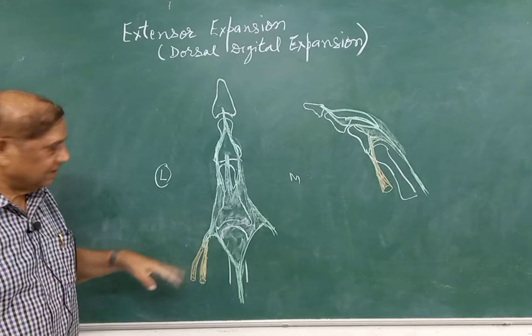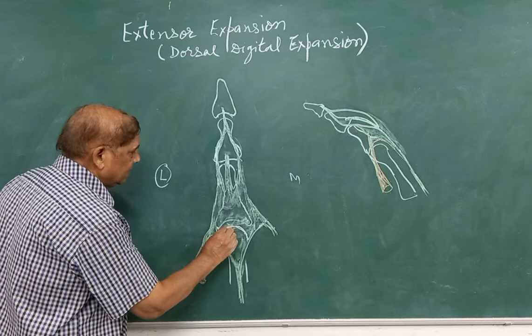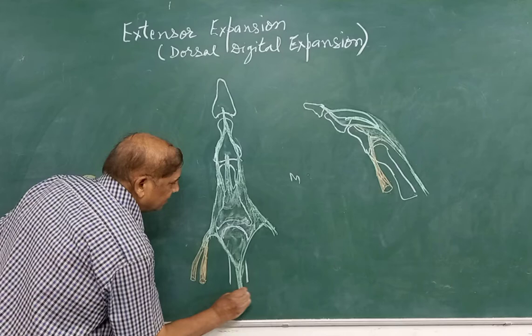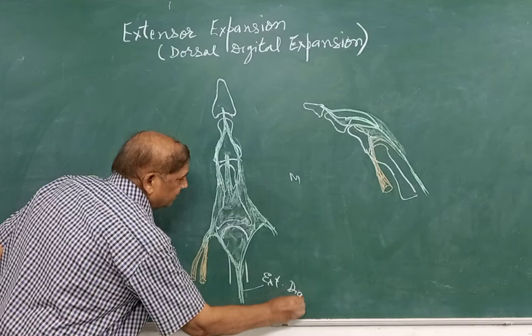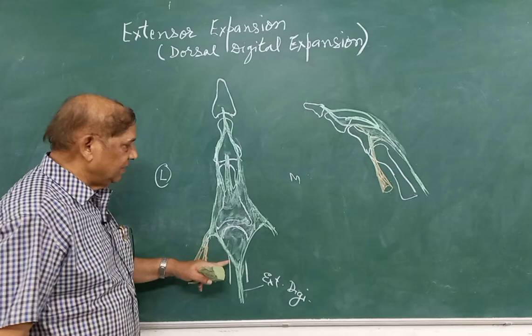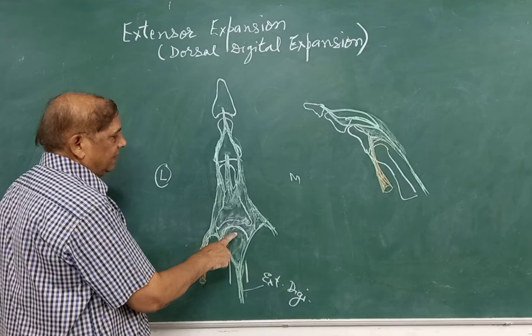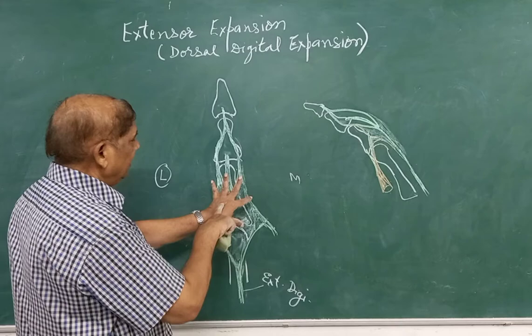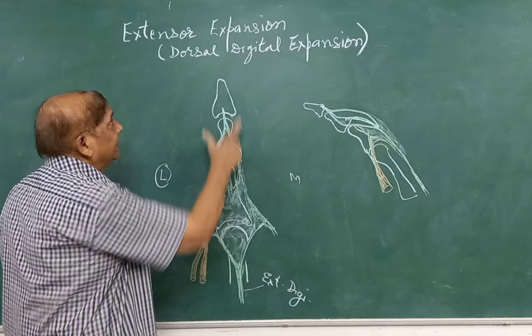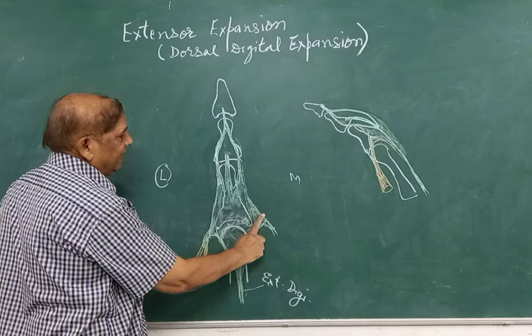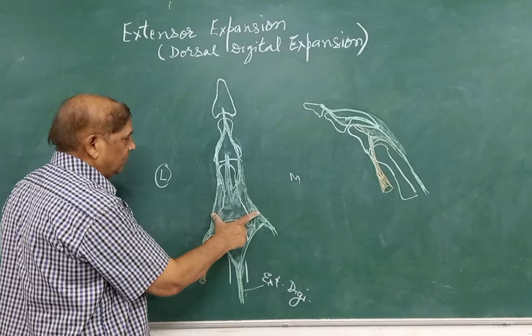This is the head of the metacarpal bone, and this tendon is the tendon of the extensor digitorum. This is the posterior aspect — the metacarpal head — and the extensor digitorum tendon goes on. When it approaches the metacarpophalangeal joint on its posterior aspect, this tendon expands. So this is the extensor expansion — a very broad expansion which almost covers the metacarpophalangeal joint.